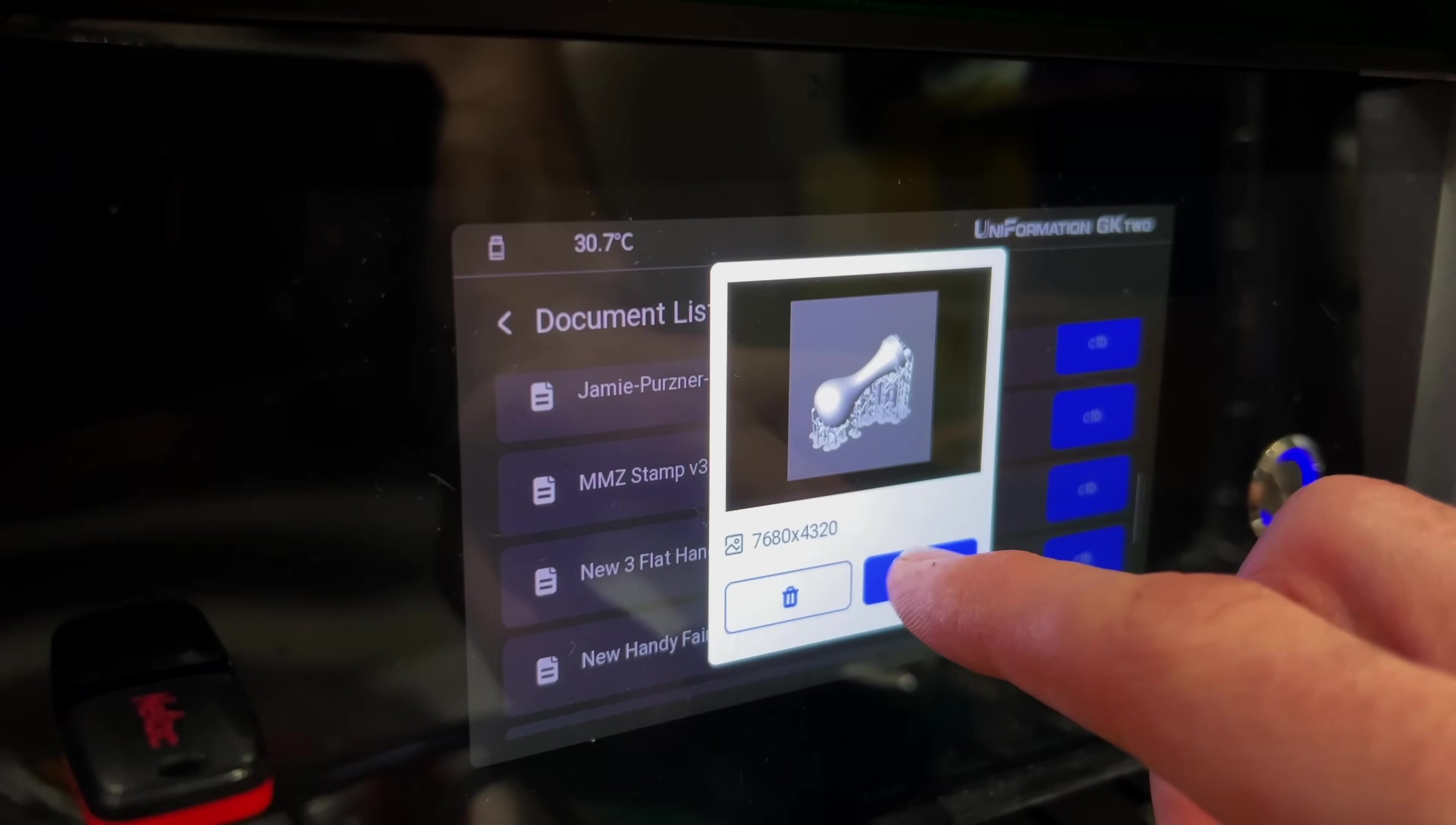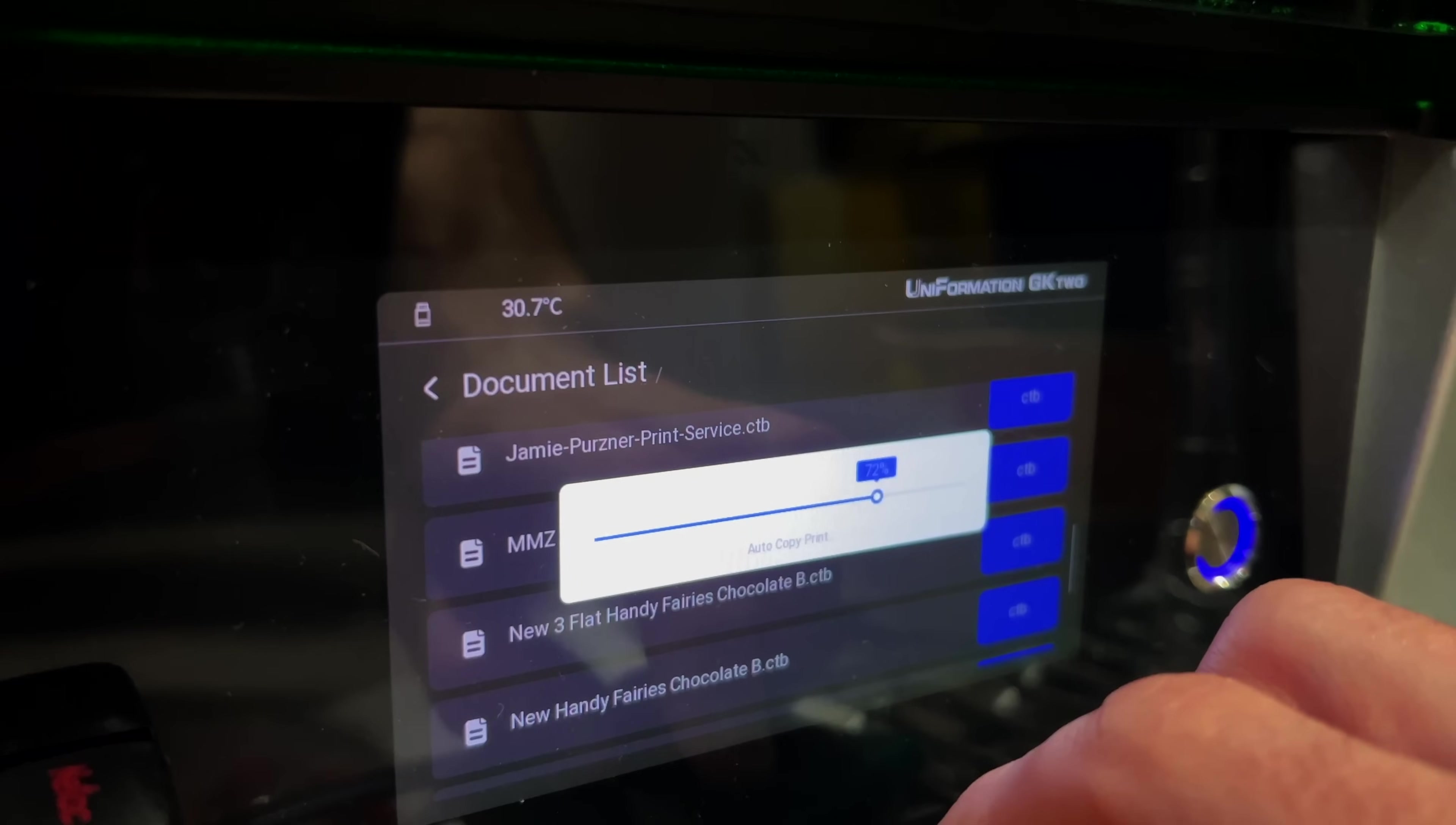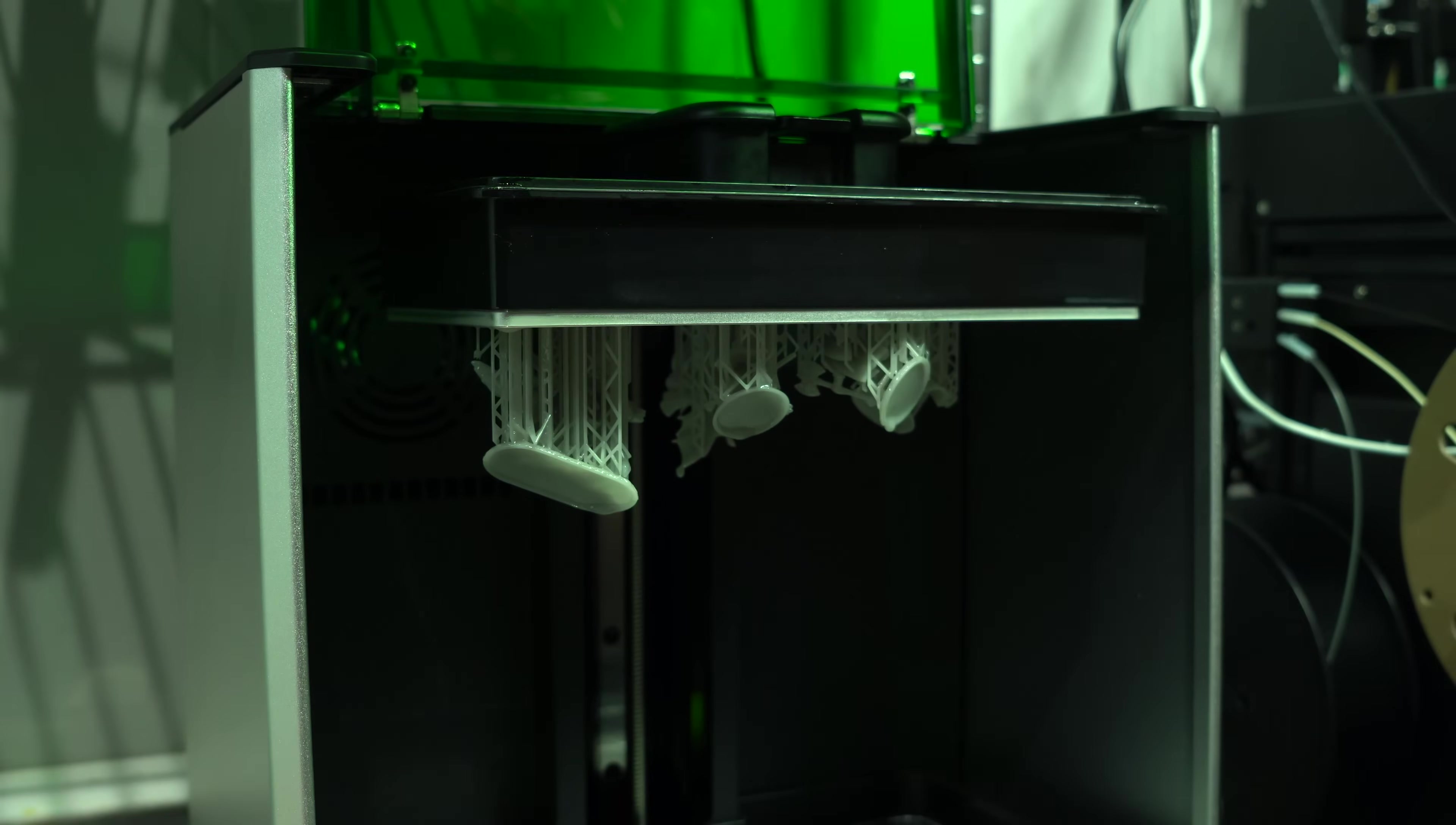If you are printing from USB, the GK2 does something clever. It automatically copies the print file to local storage, avoiding failed prints in the event of a corrupt USB key. So that's the GK2 in a nutshell, but how does it actually perform?